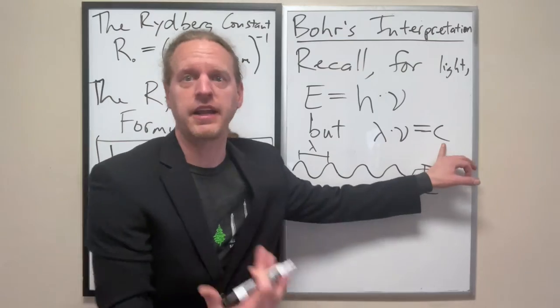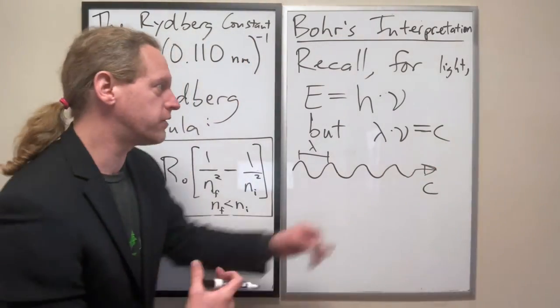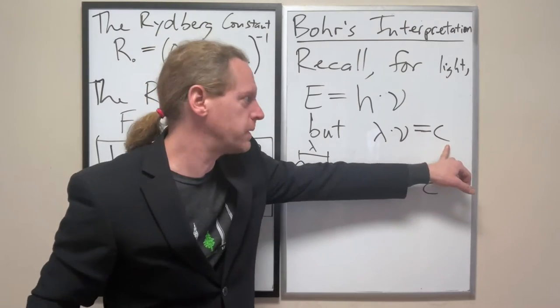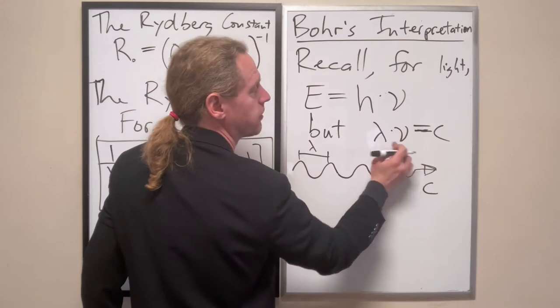For light, the answer on the right hand side is C, three times ten to the eight meters per second. For water waves, you just replace that value with some other lower value of speed. But it will always be the case that these two things are inverse to one another.